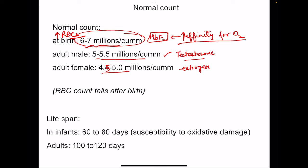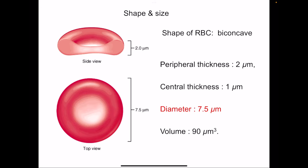Regarding lifespan, in adults the RBC lifespan is 100 to 120 days, approximately 4 months, while in infants the lifespan of RBCs is approximately 60 to 80 days, about 2 to 2.5 months. This is because in infants, RBCs are susceptible to oxidative damage.